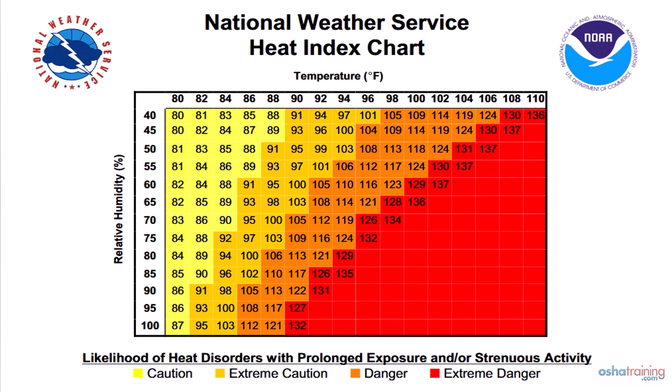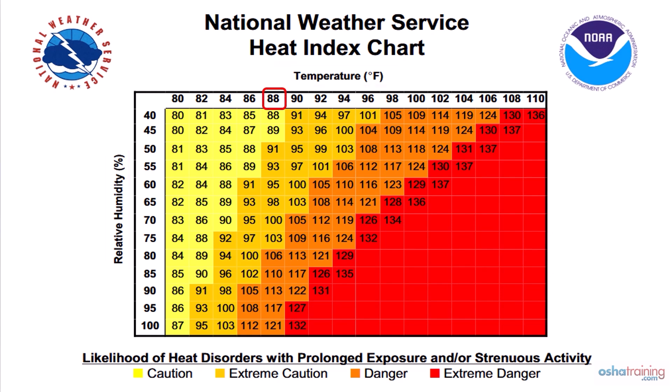Here is a chart developed by the National Weather Service called the heat index chart. It shows the effects of not only temperature on the human body but also humidity levels. This chart lists various temperatures across the top and various humidity levels down the left side, making it easy to determine the feels-like temperature when these two factors are combined. As an example, let's take a temperature of 88 degrees Fahrenheit and a relative humidity level of just 50 percent.